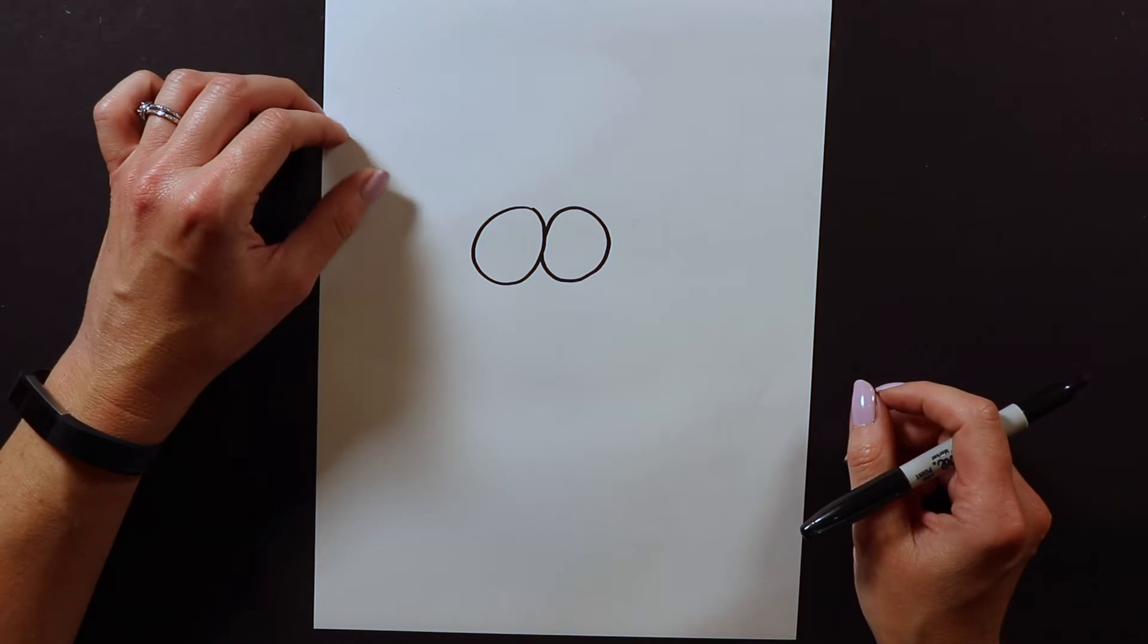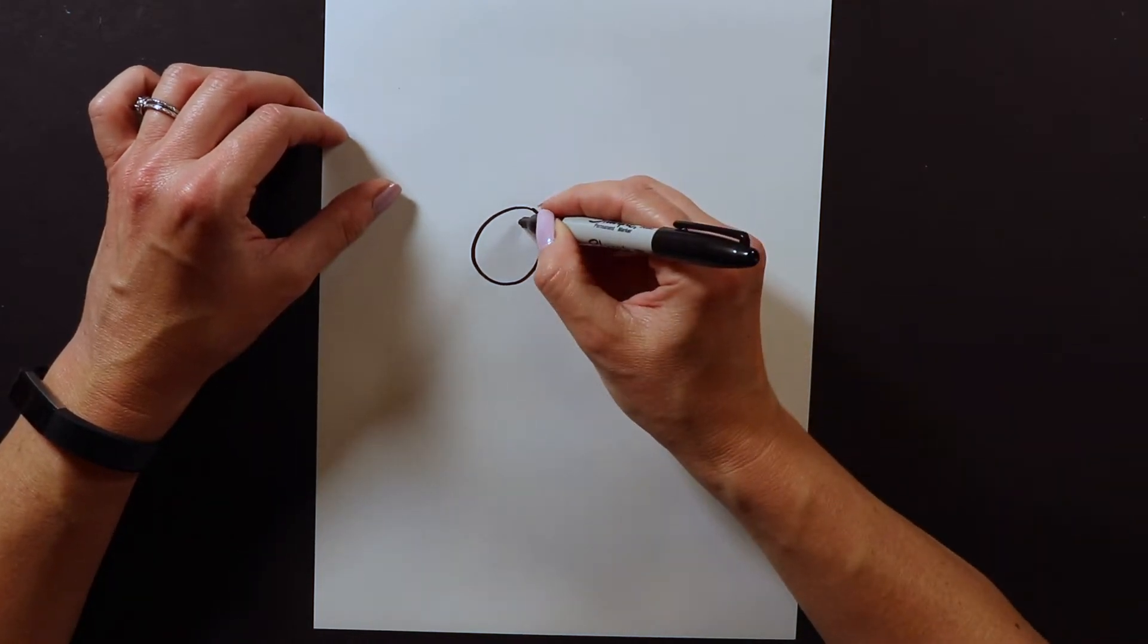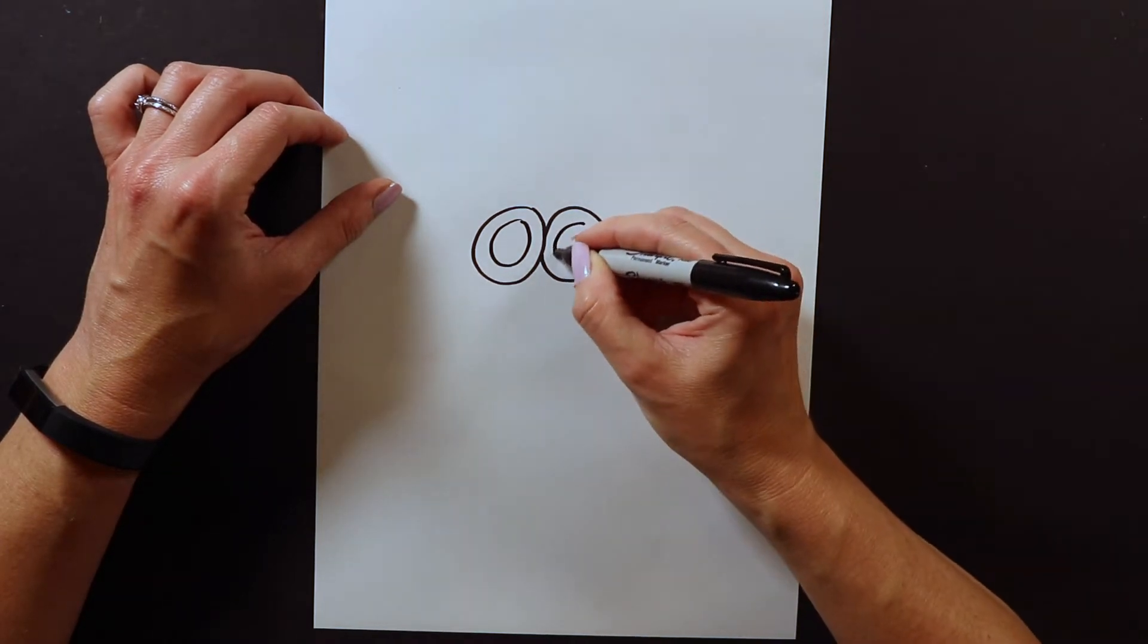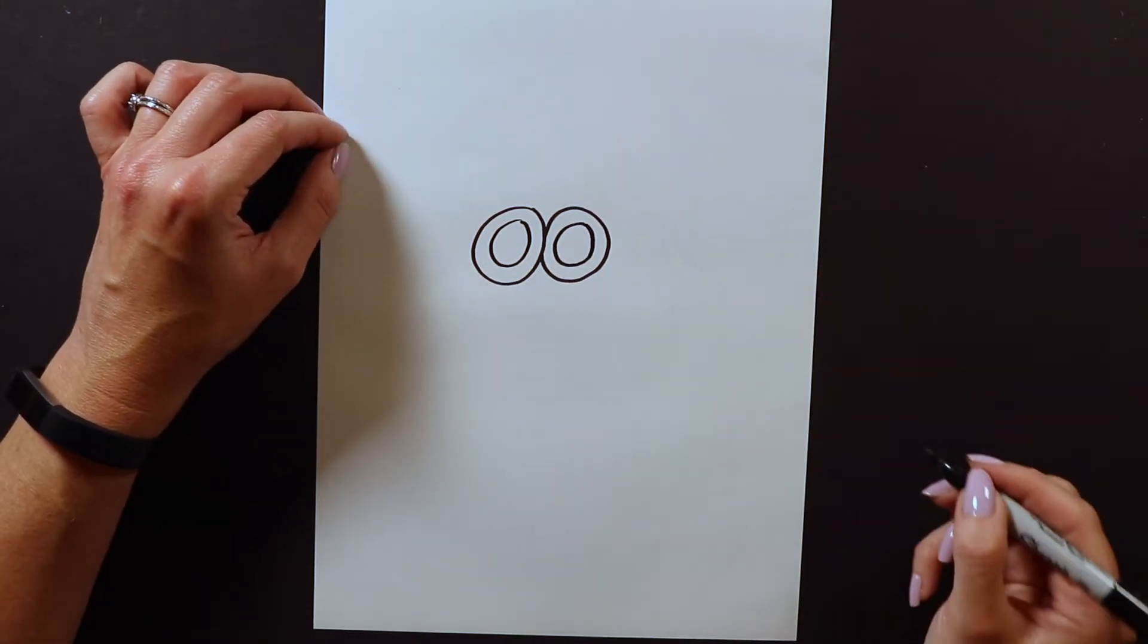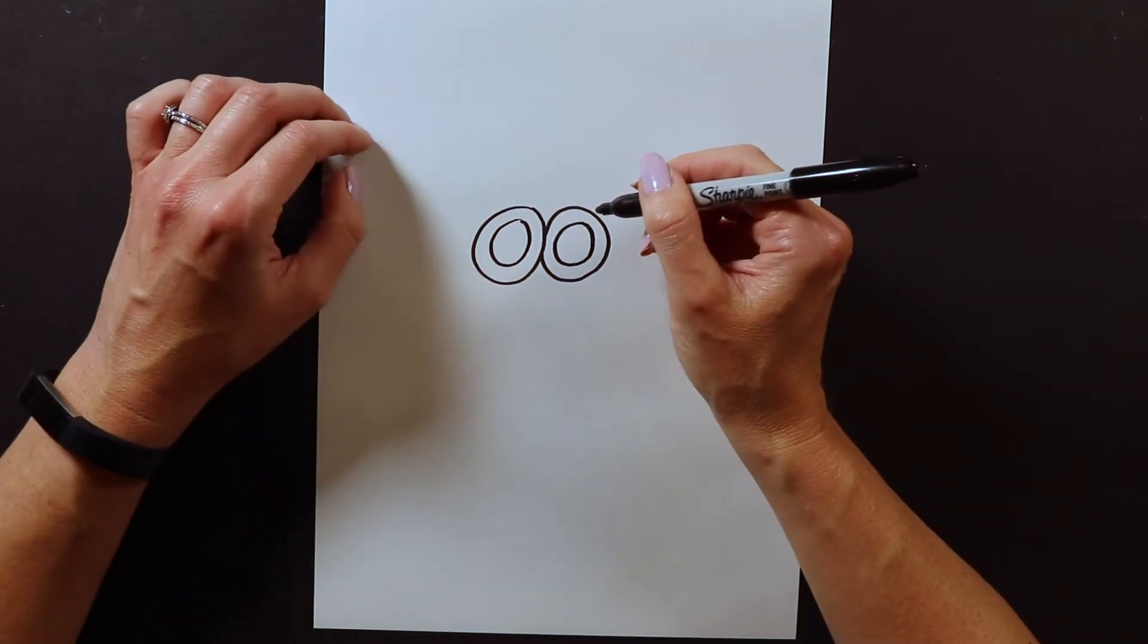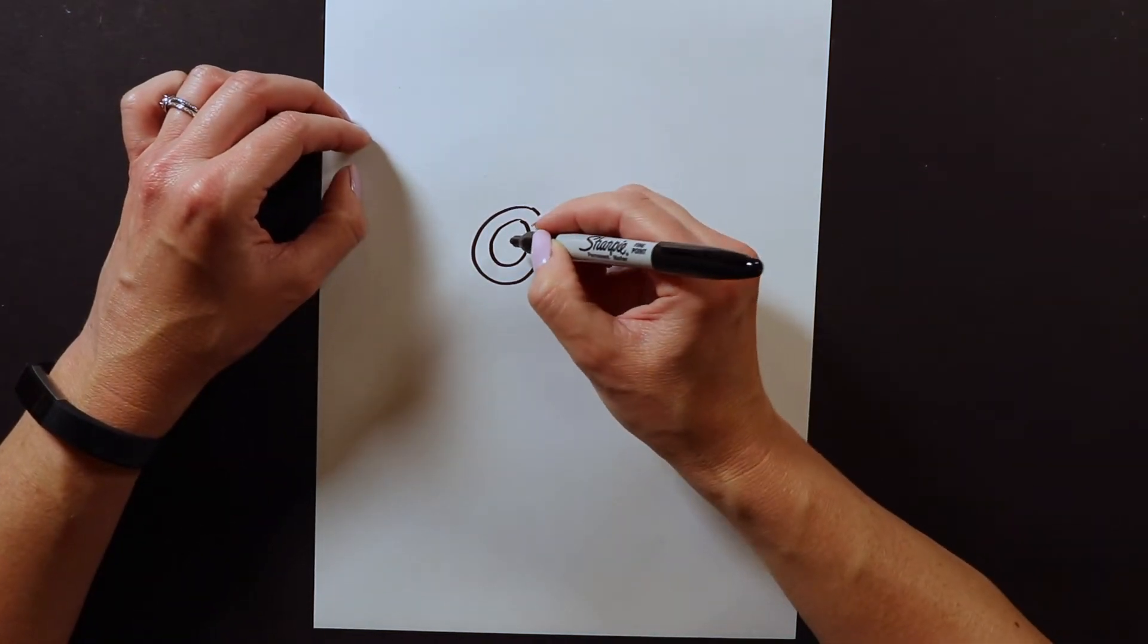After I have these two big circles I'm gonna draw another circle inside those circles. After we have that circle I'm gonna draw lots of circles today.